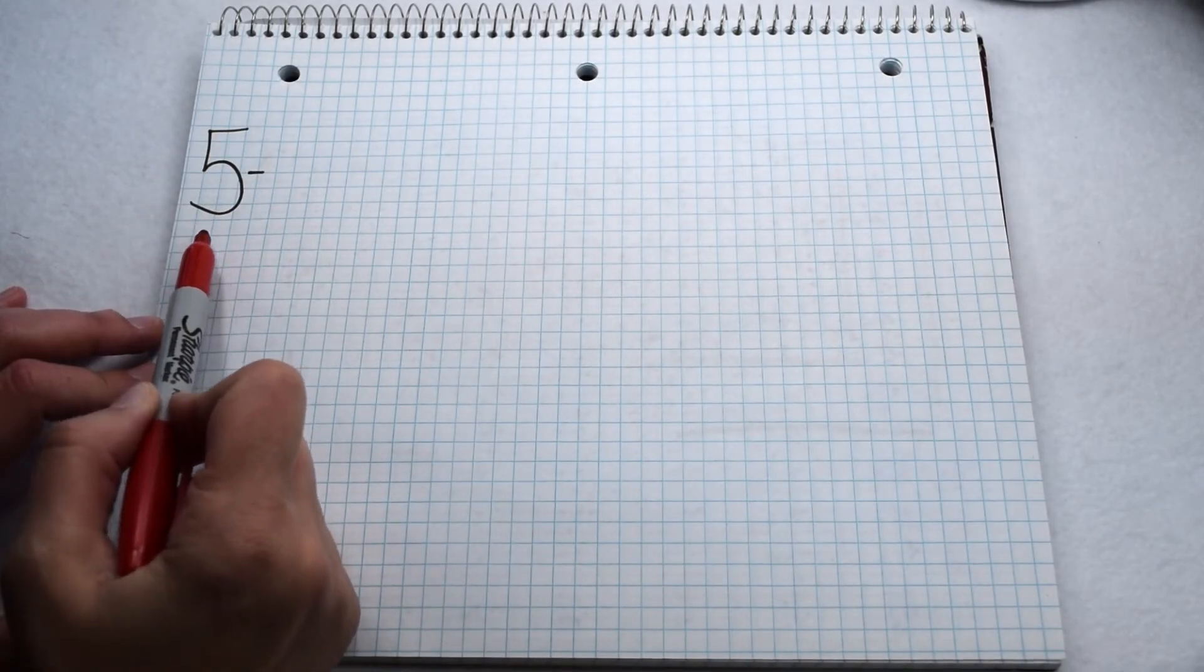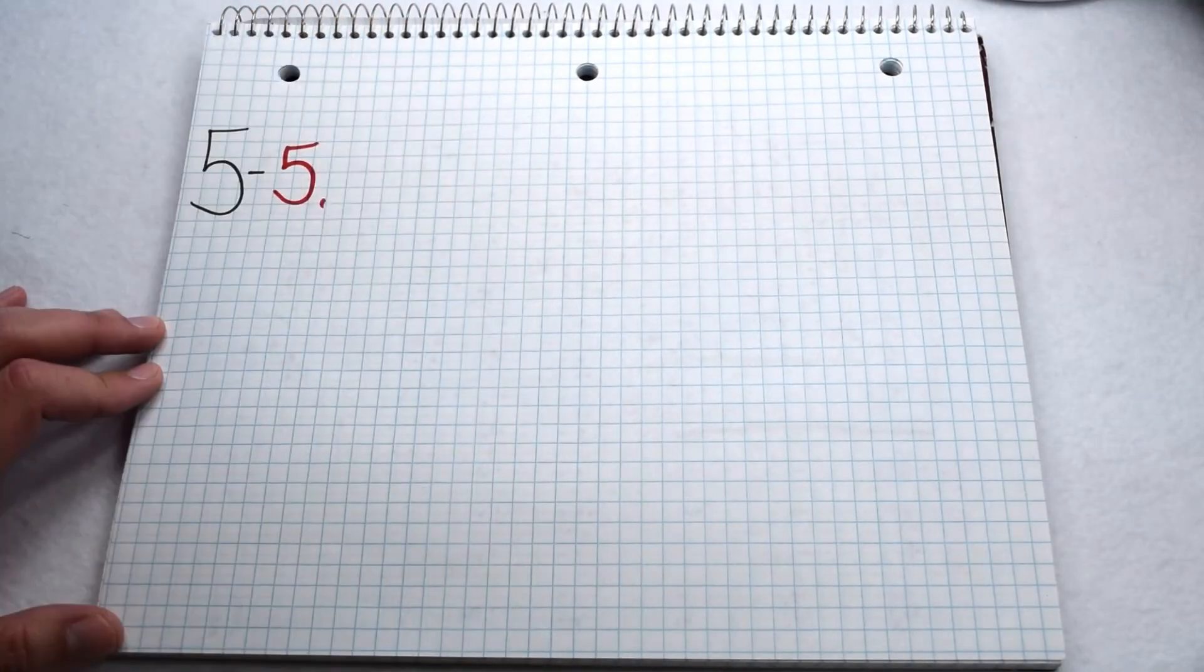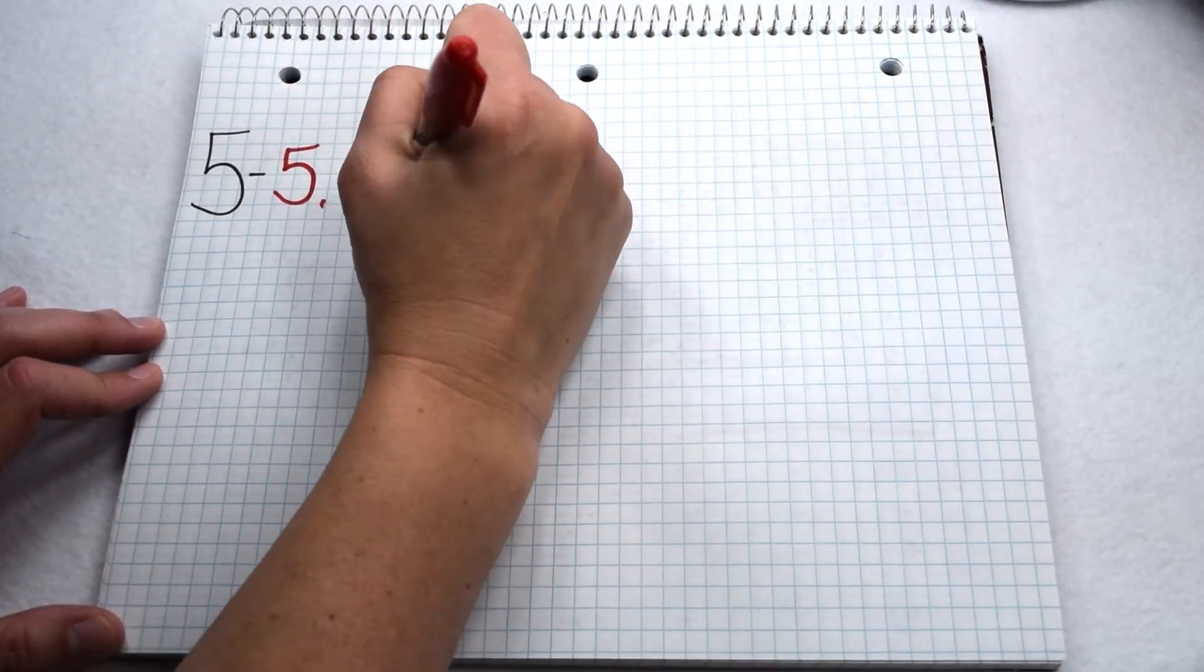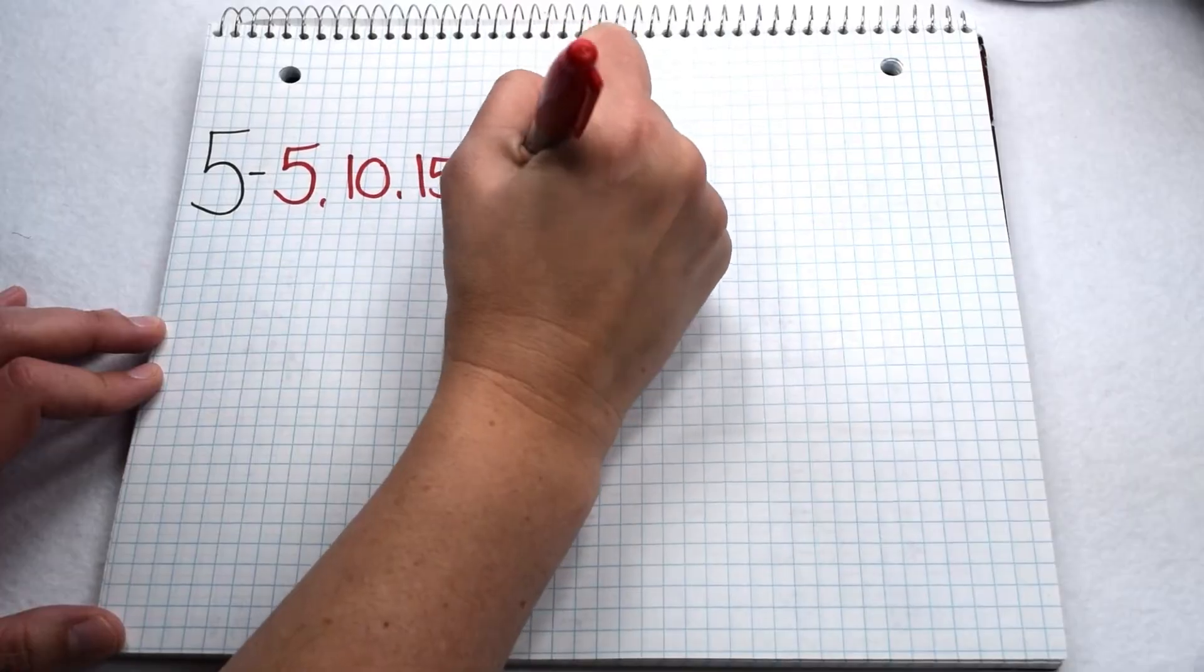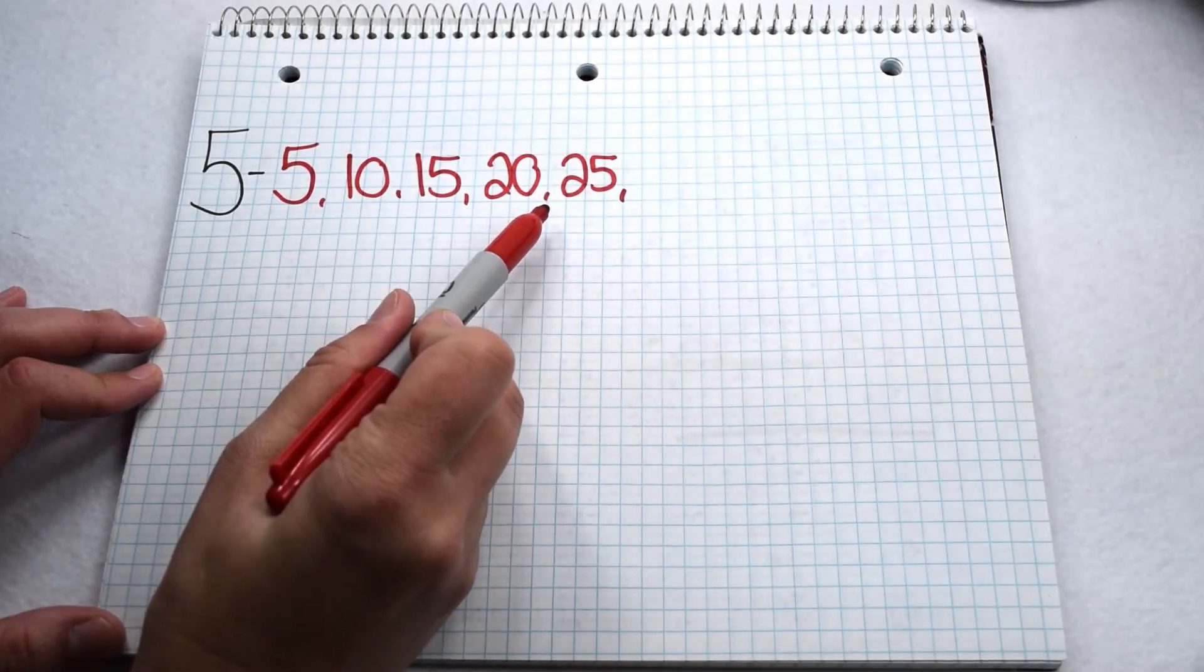Instead of going through the times tables for a value to list its multiples, we could simply count by that number. So, to list the multiples of five, we could start by counting by fives. Counting by fives gives us five, ten, fifteen, twenty, twenty-five. So, there would be our first five multiples of five.